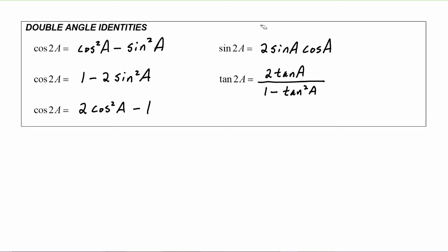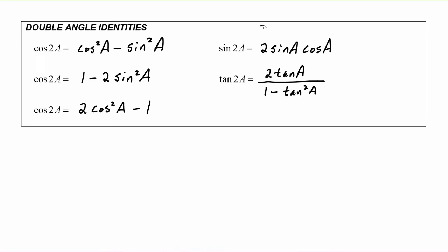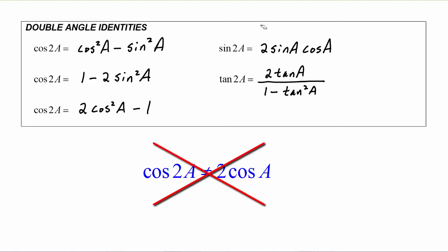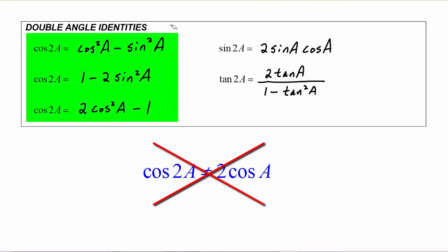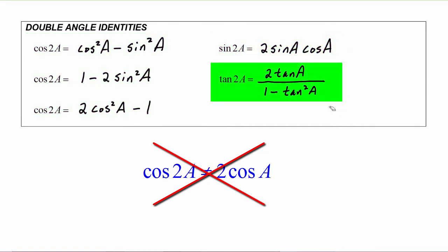To help memorize these, write them all down two or three times a day and every time you use them in a homework problem — students have found that really helps. An important thing to notice is that in all of these identities you cannot factor the two out. You cannot write cosine of 2a as 2 cosine a — that will never be true. For cosine of 2a, sine of 2a, or tangent of 2a, you must use the appropriate identity. You can never factor the two out; it does not work.